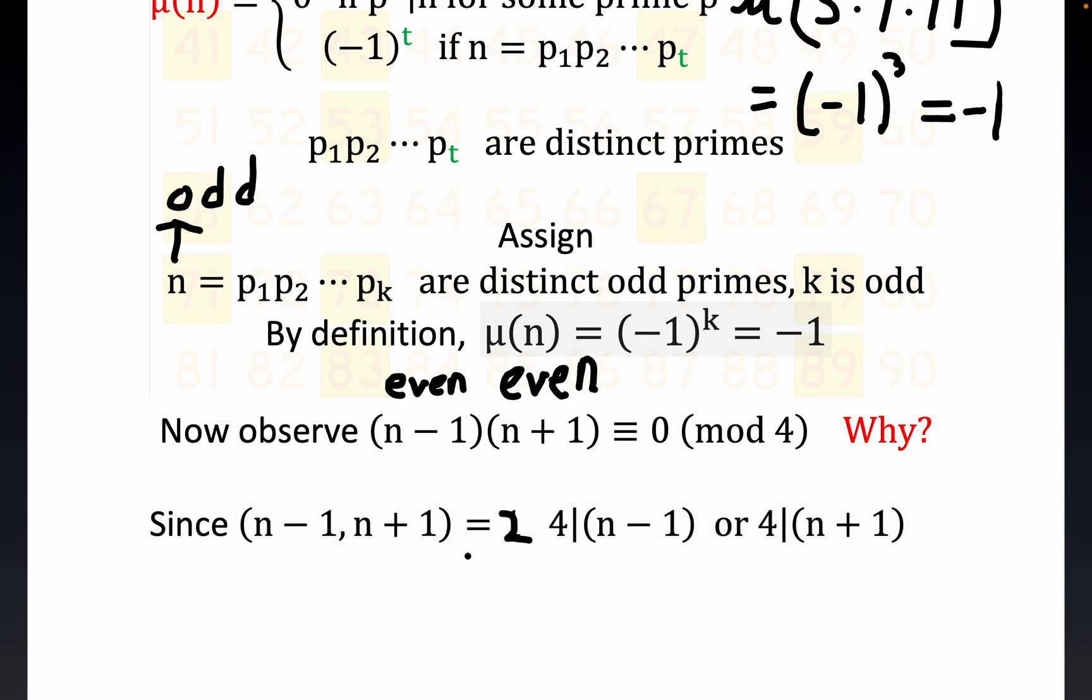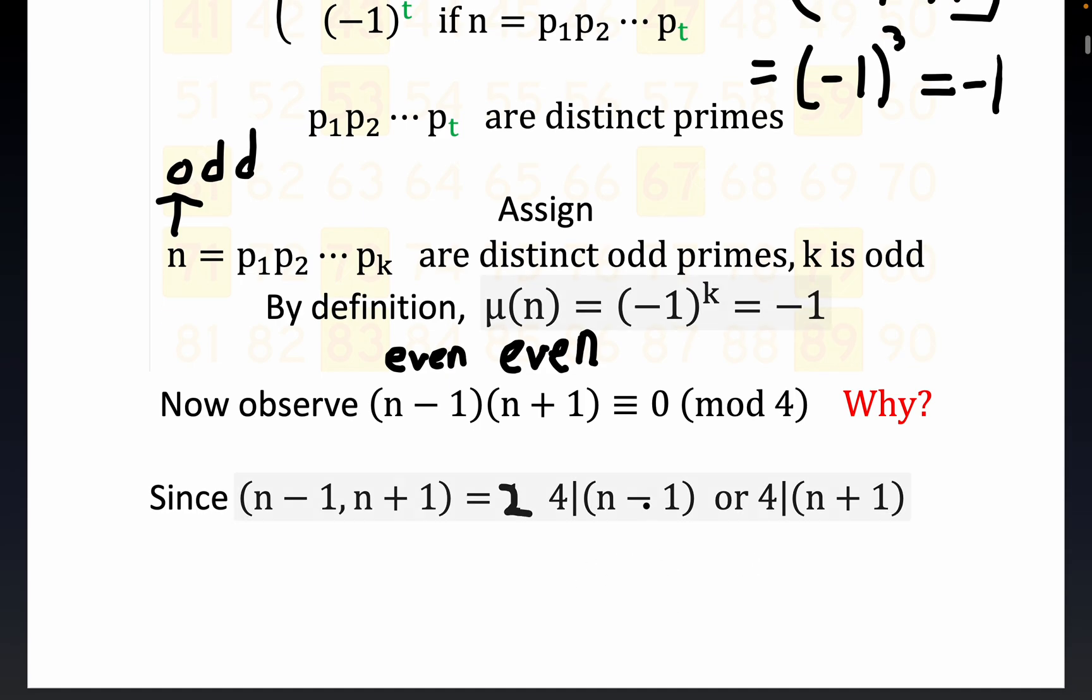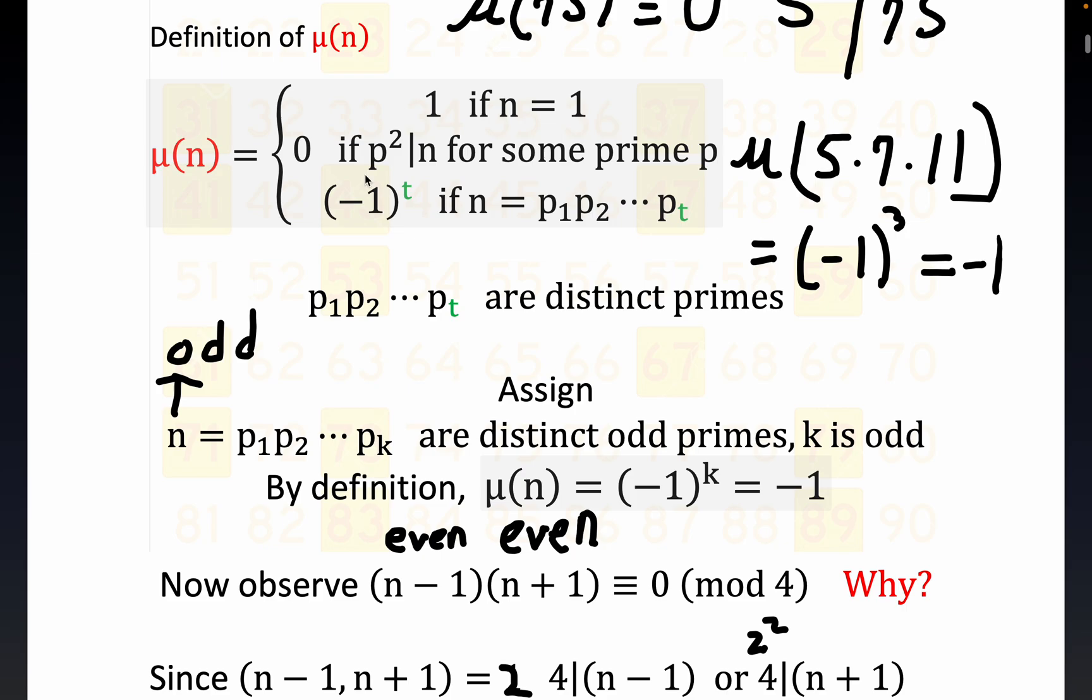That implies that 4 has to divide n minus 1 or n plus 1 in an exclusive sort of way—not both. It couldn't divide both, otherwise the GCD of these two consecutive even numbers would be 4. It's a known fact that the GCD of consecutive even numbers is 2, so 4 can only divide one of these. Again, we have 4 divides n minus 1 or 4 divides n plus 1. Notice that meets the condition—4 is 2 squared, so that means it sends μ to 0.